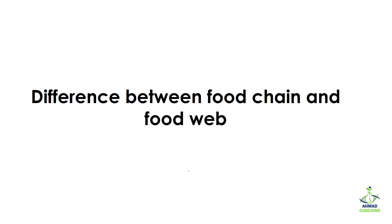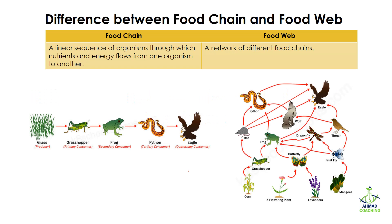Hello everyone, welcome to Amat Coaching and I'm your teacher Dr. Anam. Today we will study about the difference between food chain and food web. A food chain is a linear sequence of organisms through which nutrients and energy flow from one organism to another organism. It moves in one straight direction.